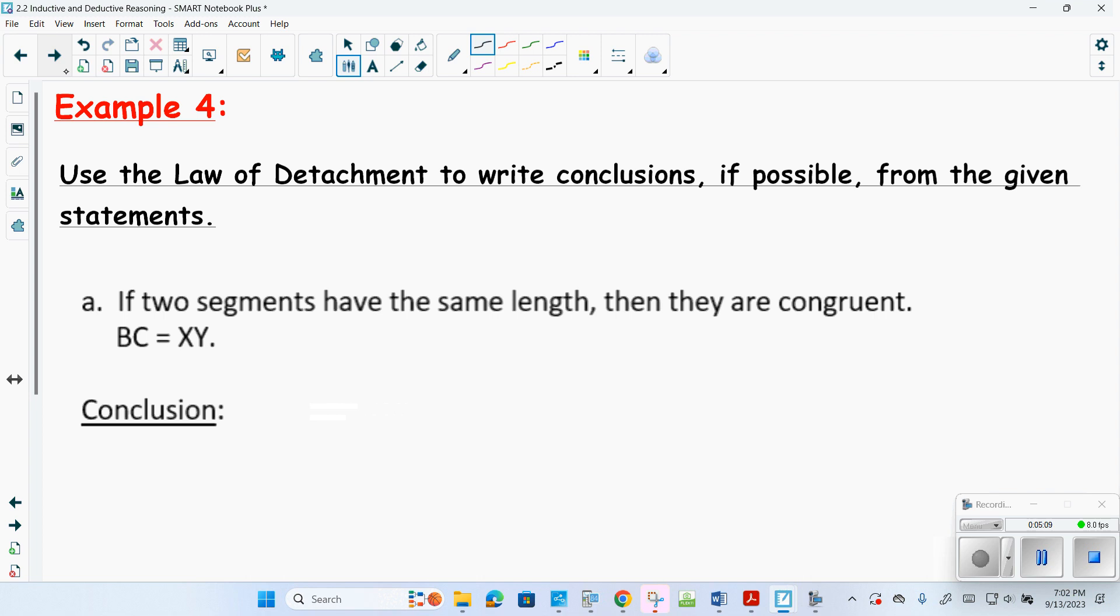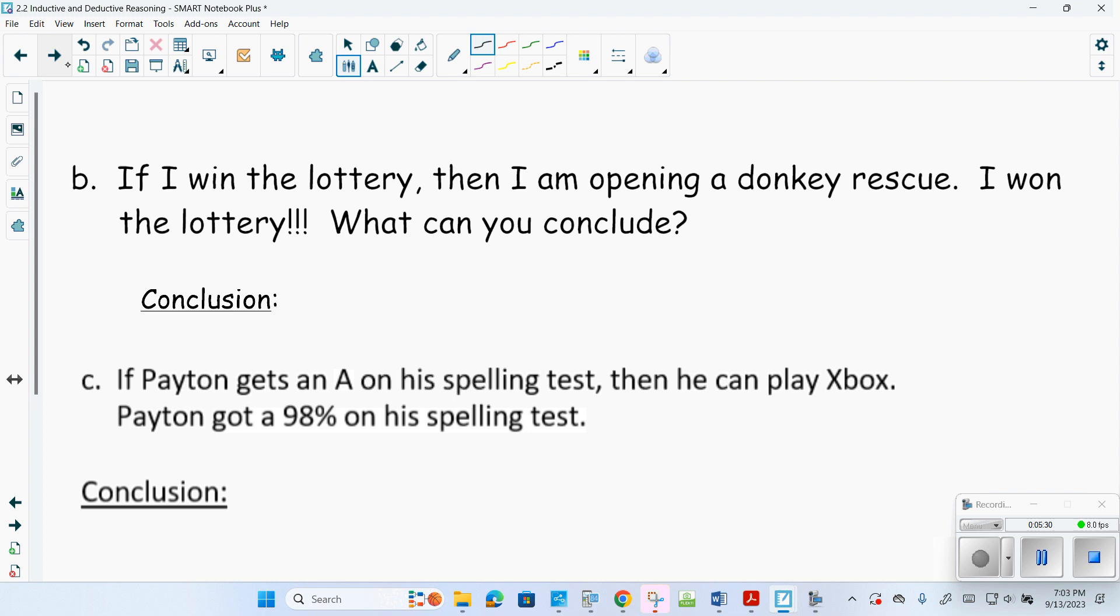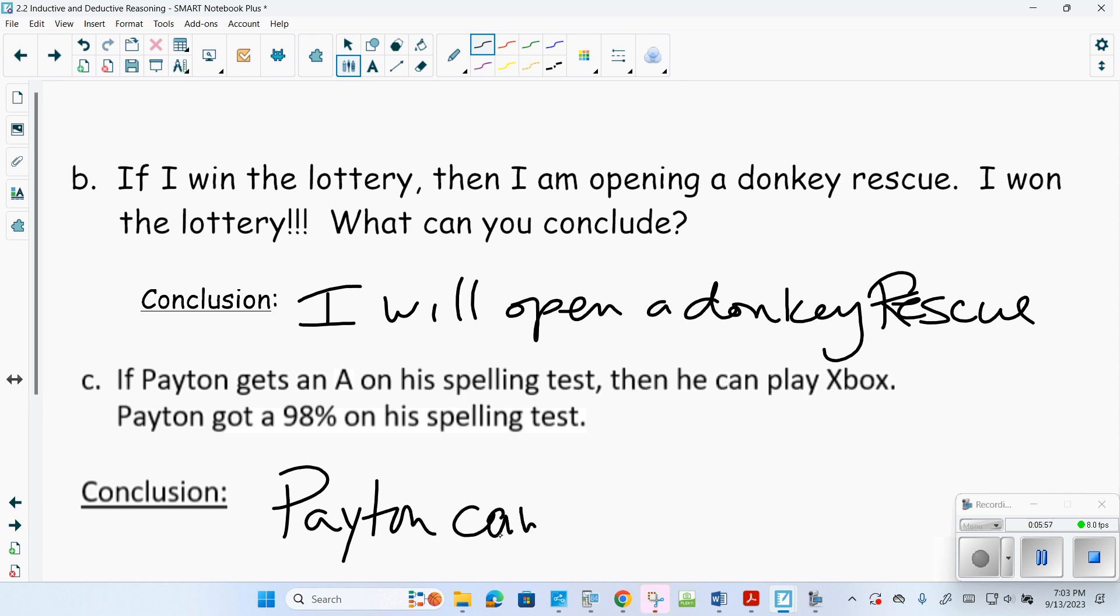Use the law of detachment to write, if possible, from the given statement. If two segments have the same length, they are congruent. If I win the lottery, then I'm opening a donkey rescue. I won the lottery. What can I conclude? I will open a donkey rescue. If Peyton gets an A on his spelling test, then he can play Xbox. Peyton got a 98% on the spelling test. Peyton can play Xbox.